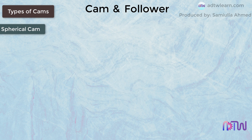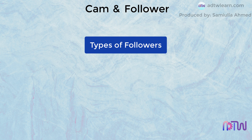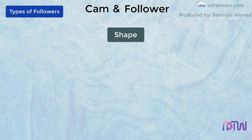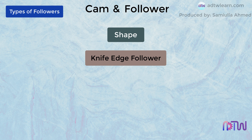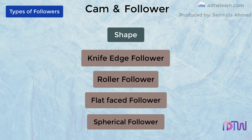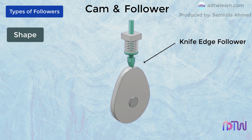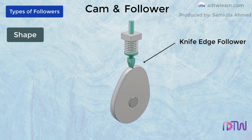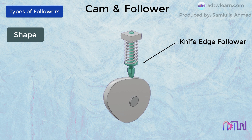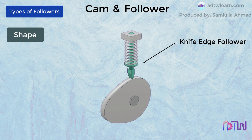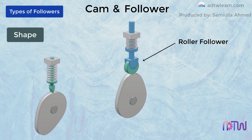Types of followers: followers are classified based on their shape, position, and type of motion. Based on shape, followers are classified into knife edge follower, roller follower, flat faced follower, and spherical follower. Knife edge followers have a pointed edge and there is a sliding motion between the cam and the follower. This type of setup is simple and compact. The problem with this follower is friction and wear due to the sliding motion, causing a lot of wear.